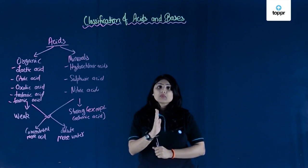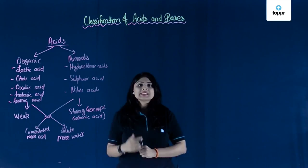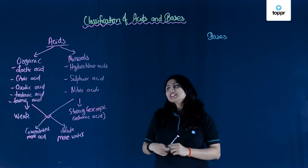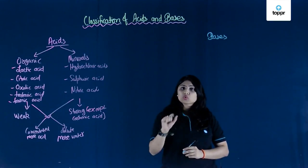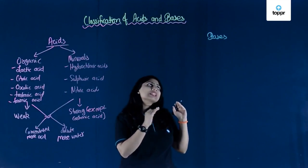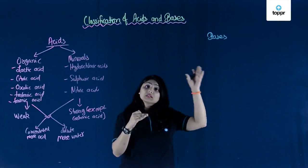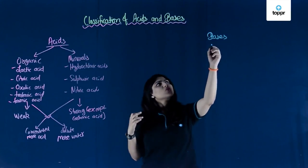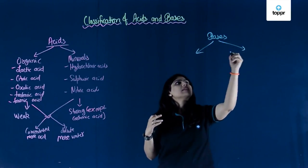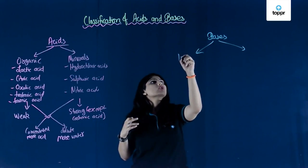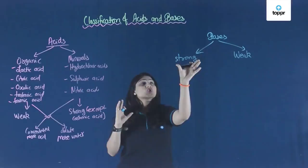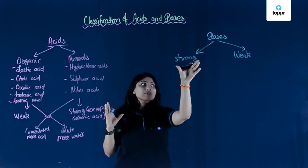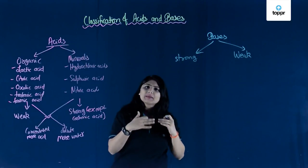Now let's see the classification of bases. Bases, just like acids, can be organic and inorganic depending upon the source they come from. But basically, we do not classify bases on the basis of source. We classify them as strong and weak just like acids. Strong bases are very corrosive and weak bases are very mild — they can also be consumed.